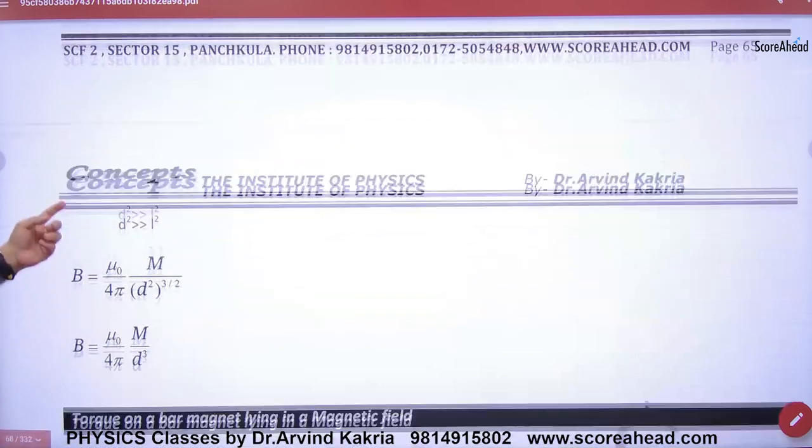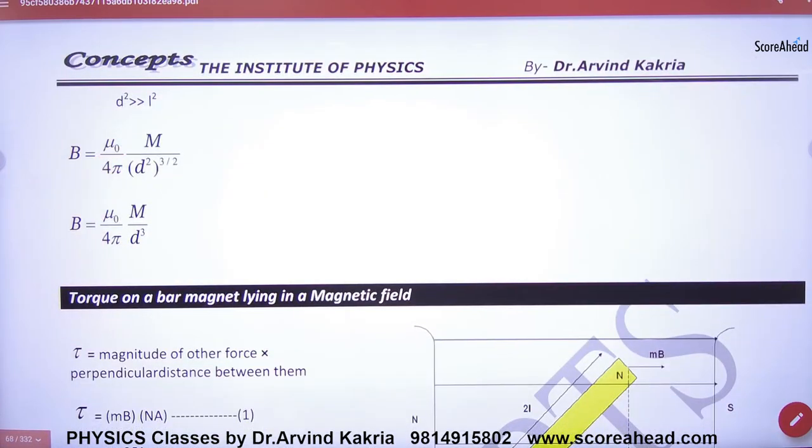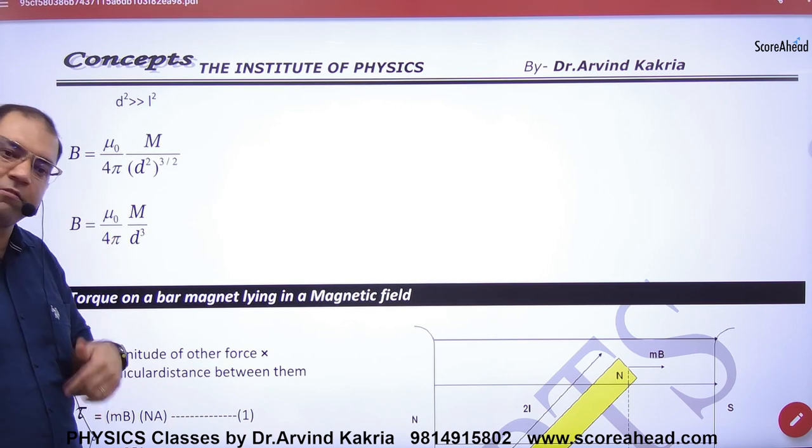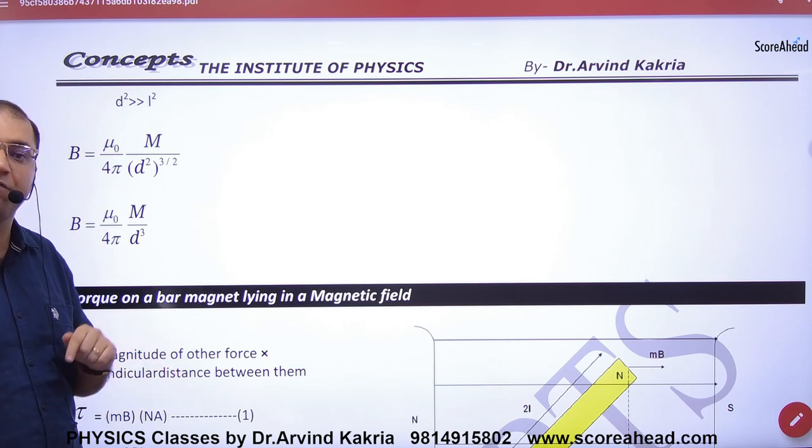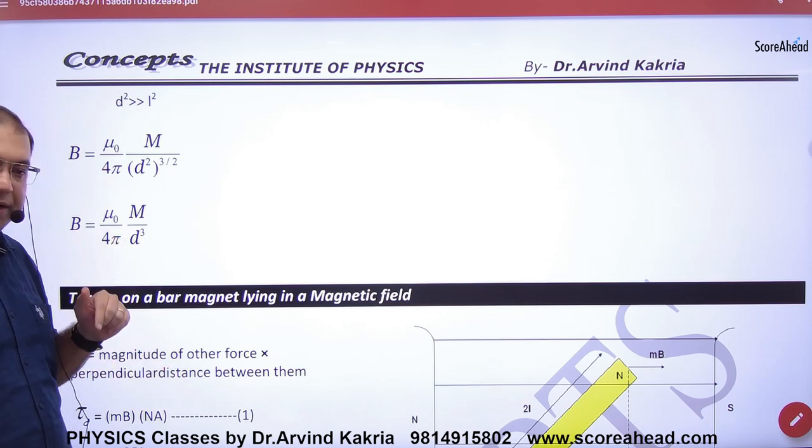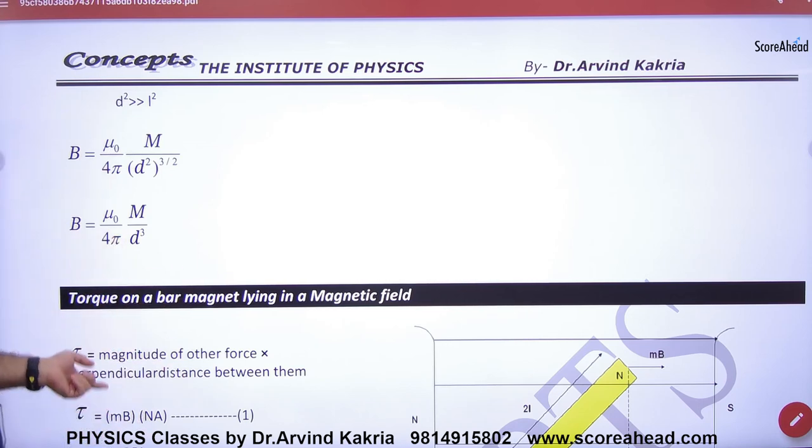And if there is a short dipole, D greater than L, if we solve it, mu naught by 4 pi, M by D cube. You will remember that electrostatics also had such a result. Axial line was 2M by D cube. This is M by D cube. Right?